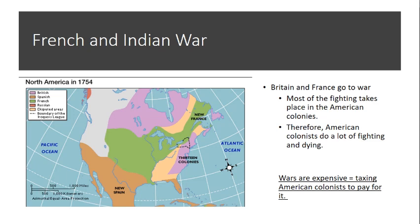Let's start with the French and Indian War. In the 1750s, Britain and France went to war, and most of the fighting took place in the American colonies — not in Britain or France, but in America. Therefore, the American colonists did most of the fighting and the dying. Wars are expensive, so to pay for the war against the French, the British crown raised taxes on American colonists. Americans were outraged — they had to fight, die, and now pay taxes for it. As soldiers came home injured and wounded, unable to work the farm, the king was raising their taxes, making them very upset.